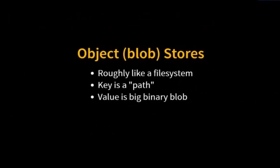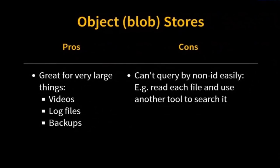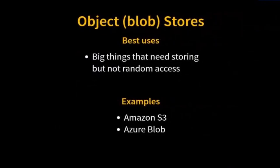Next, object stores. S3 is a great example — we have a key that is a path, and let's pretend it's files and folders, but really it's just a key delimited by slashes. The value is one big binary blob. I might store things like database backups, movies, or images. I can query by ID and render these big things in really elegant ways. On the downside, I can't filter by anything else. If I want to filter by when a document was last updated, I'd need to grab each backup, unzip or untar it, and deserialize it. I might want an additional relational data store that stores the metadata associated with each file. Object stores are best for big things where you only need to grab them by key.